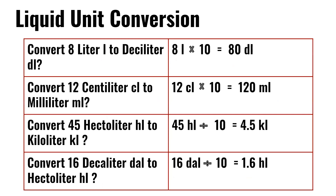Convert 45 hectoliters to kiloliters: 45 hectoliters divided by 10 is equal to 4.5 kiloliters. Convert 16 deciliters to hectoliters: 16 deciliters divided by 10 is equal to 1.6 hectoliters.